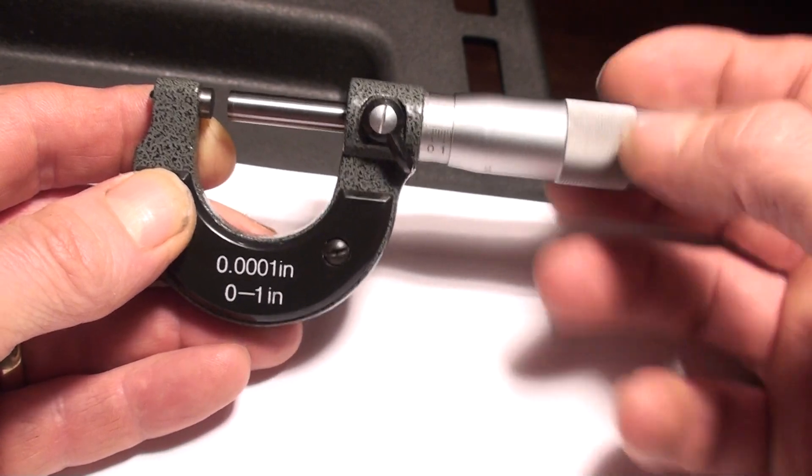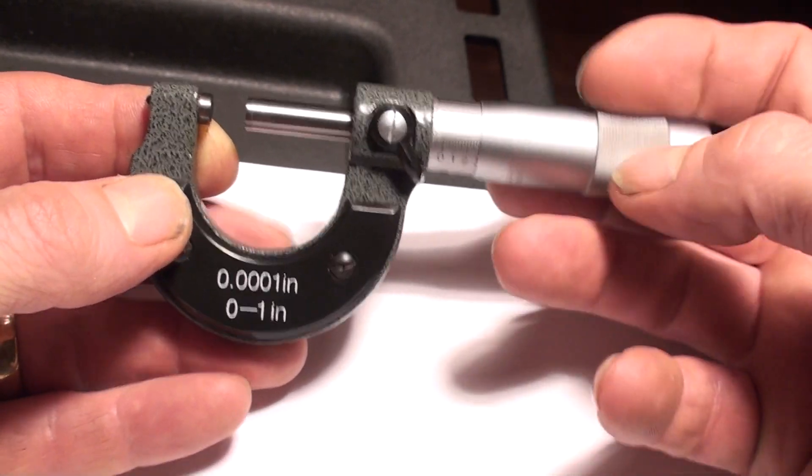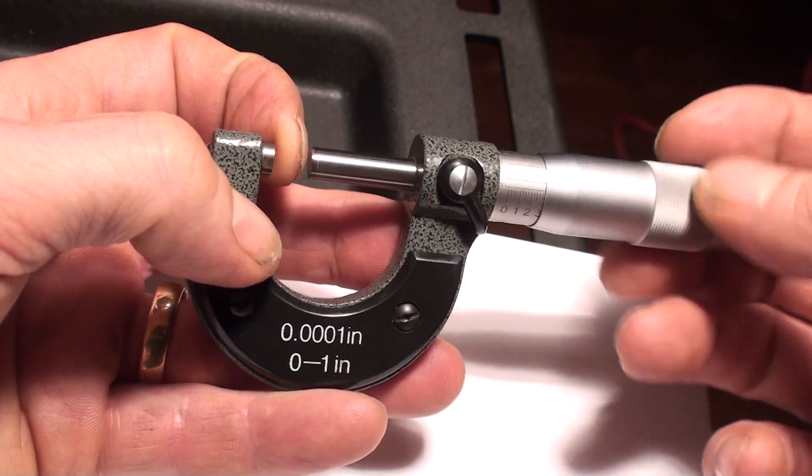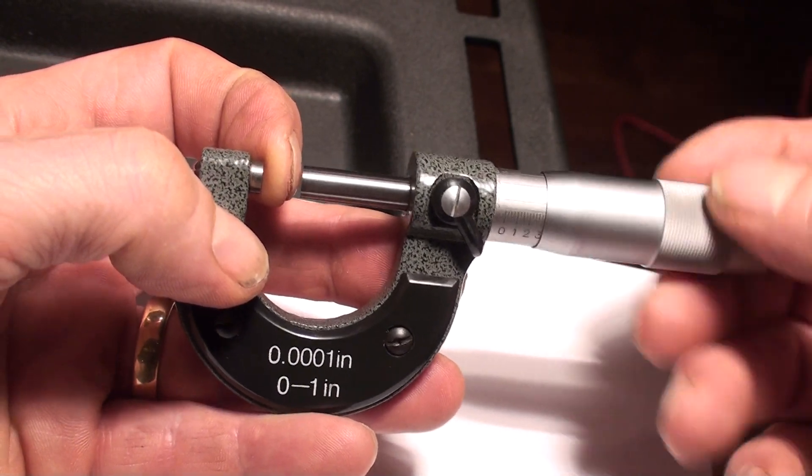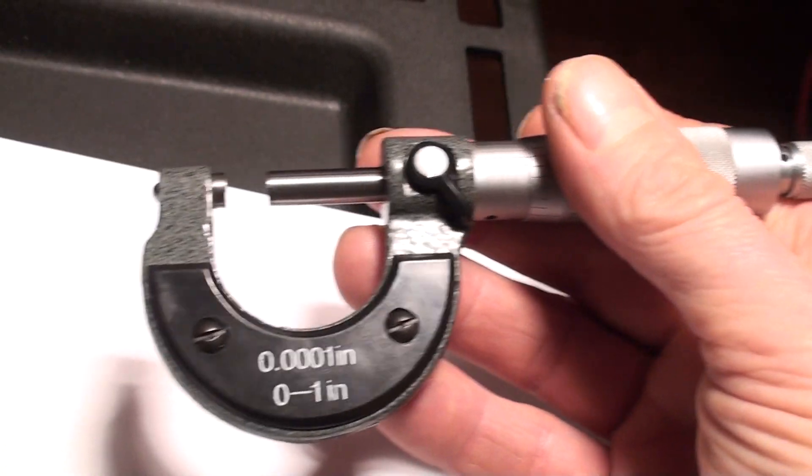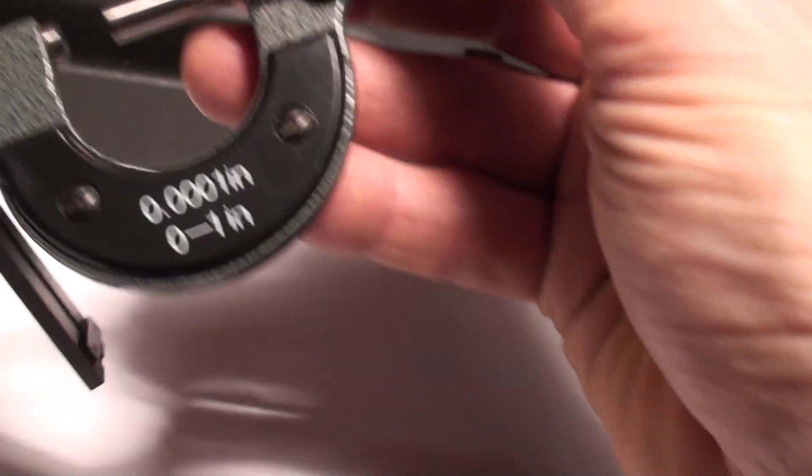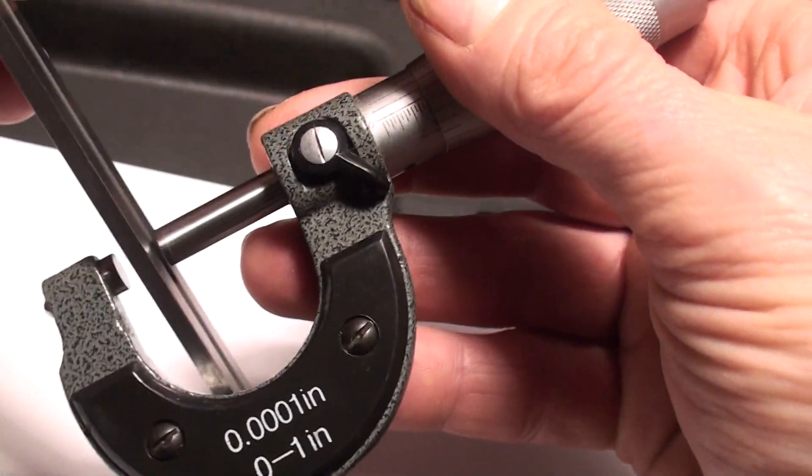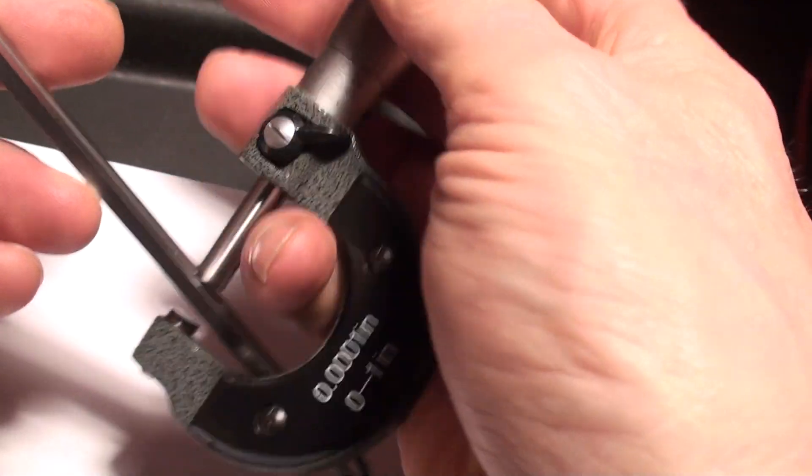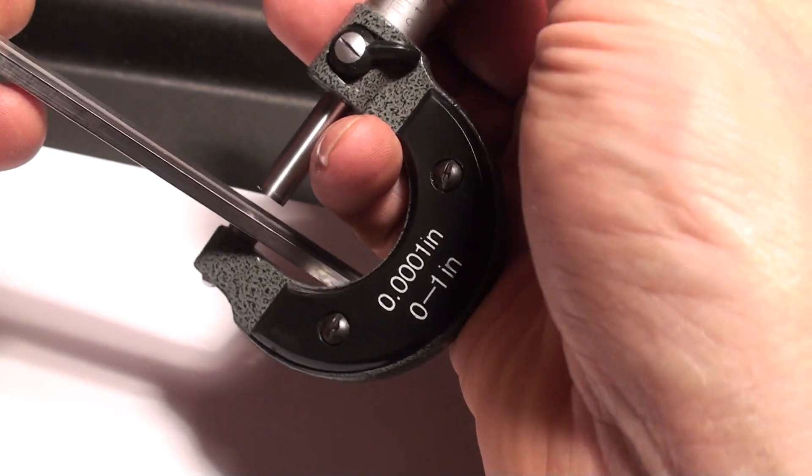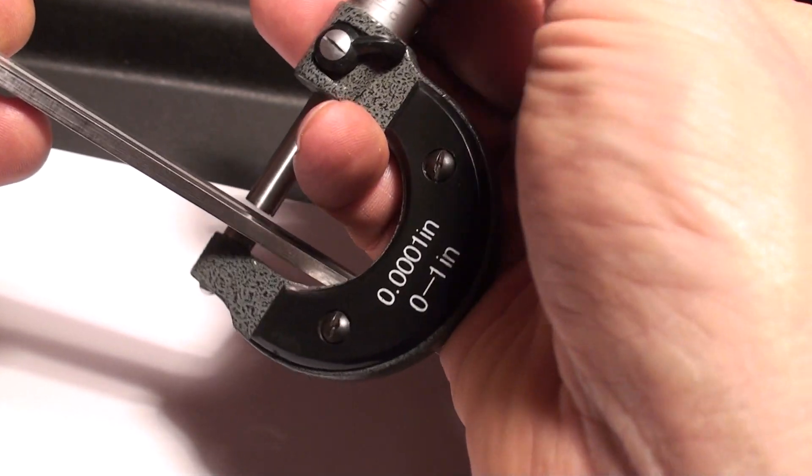The idea of this micrometer is to measure through this gap here, zero to one inch in this gap. You measure an object, pull it like this, and screw down on it until you get the measurement.